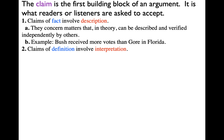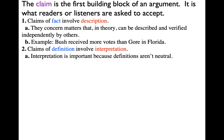Claims of definition involve interpretation. They're not always just a matter of going to a dictionary to see if you've got the right definition for something. Definitions are not neutral — they're not always just in dictionaries. Here is a claim of definition: 'Abortion is murder.' We've got the word 'is' there, which often signals a claim of definition. You can see how it's an interpretation — it's sort of a loaded claim. Another example: 'A hanging chad is a vote.'